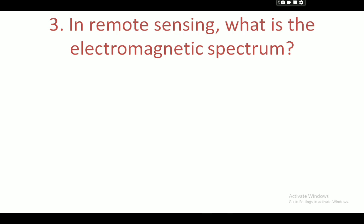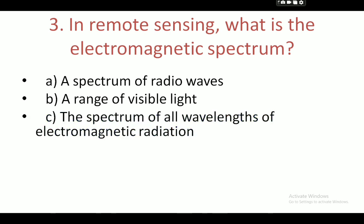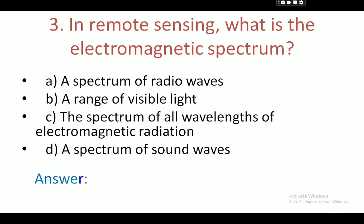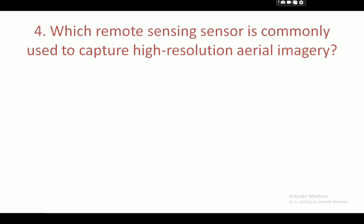Next question: in remote sensing, what is the electromagnetic spectrum? Option A is a spectrum of radio waves, B is a range of visible light, C is the spectrum of all wavelengths of electromagnetic radiation, and D is a spectrum of sound waves. Your correct answer is C — the spectrum of all wavelengths of electromagnetic radiation.